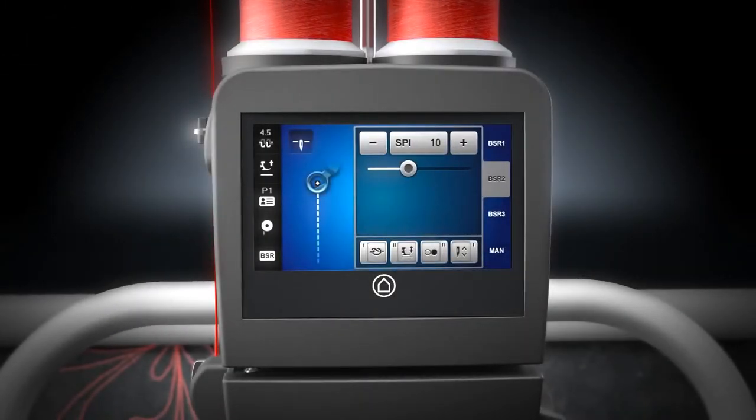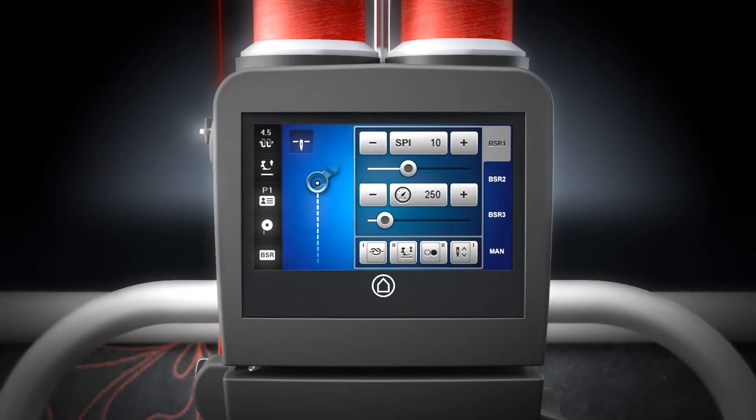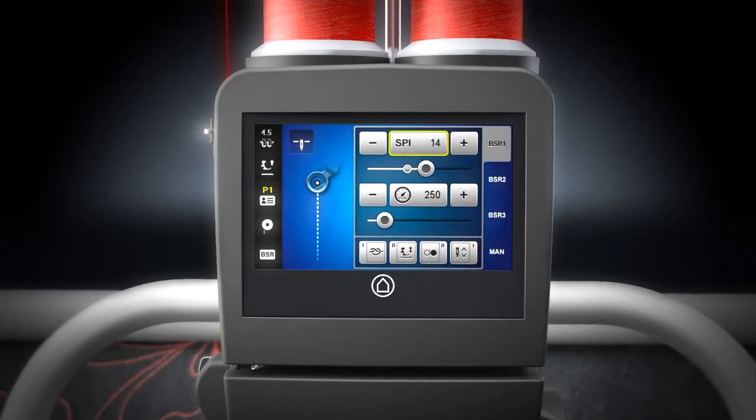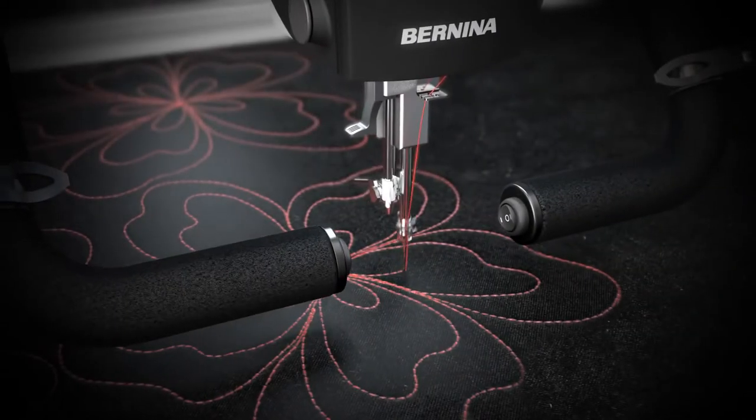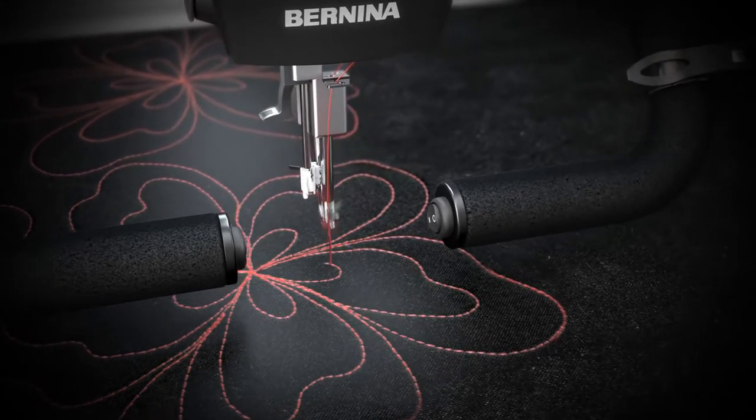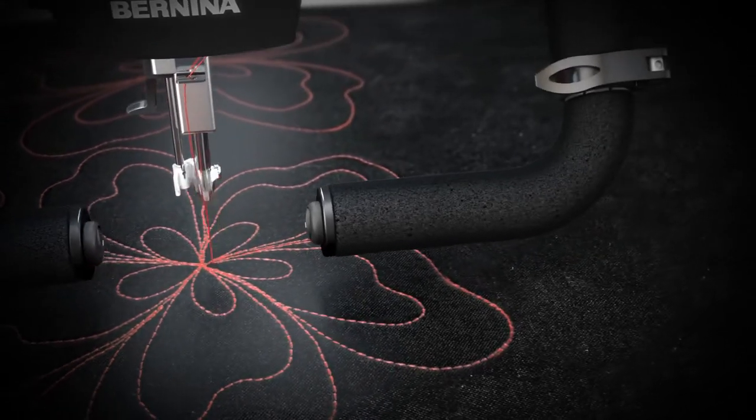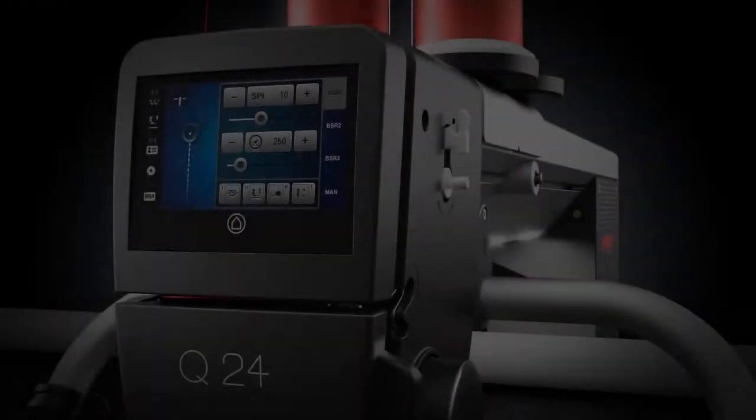There are three BSR modes to choose from. In BSR Mode 1, in addition to stitch length, you can also set an idle needle speed. In BSR Mode 2, the needle stops when the machine or the fabric is not moved. And BSR Mode 3 features various pre-programmed basting stitches with one, two or four stitches per inch.